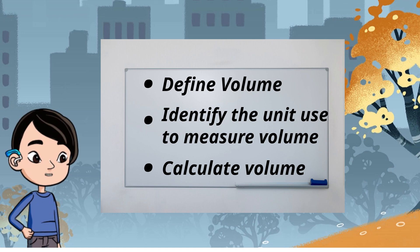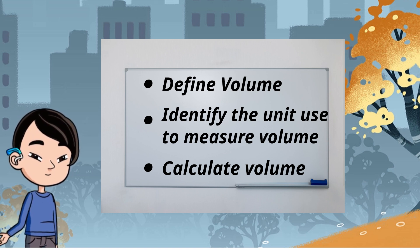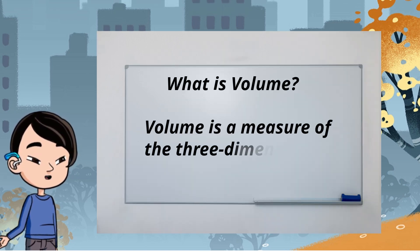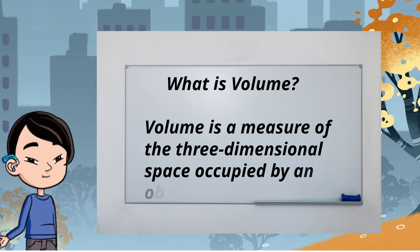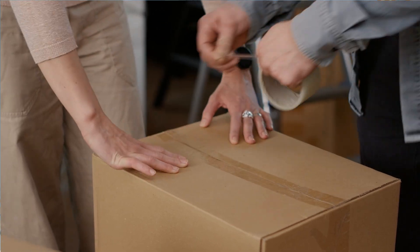Let's start with the definition for volume. Volume is a measure of a three-dimensional space occupied by an object. If it can be filled up, then it has volume.